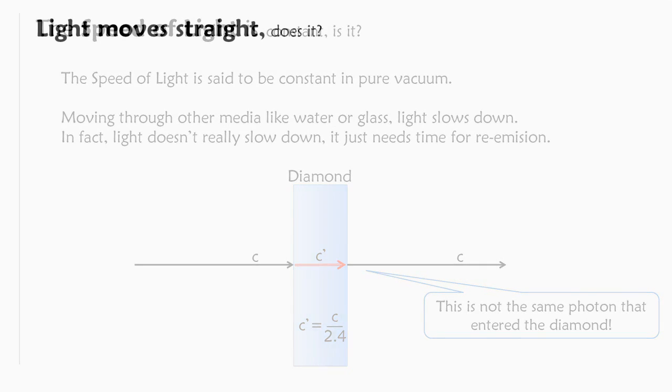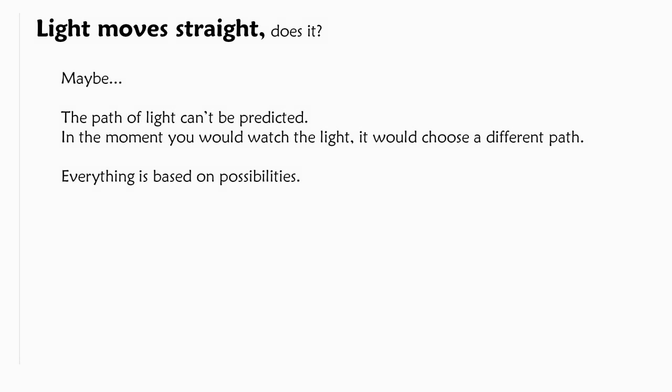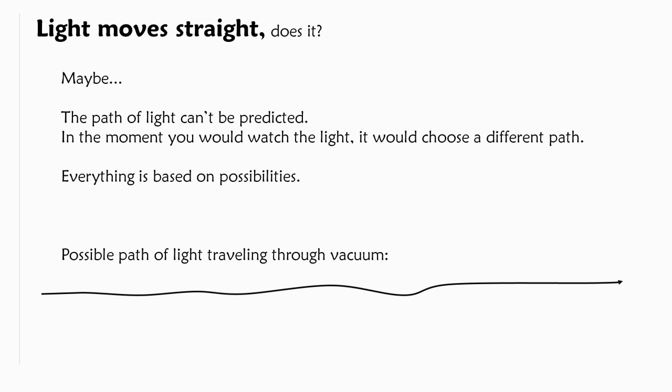Okay next chapter light moves straight does it and you can only say maybe because the path of light can't be predicted. In the moment you would watch the light it would choose a different path than it would take if you wouldn't watch. So everything is based on possibilities. And right here you see a possible path of light traveling through vacuum. It could look like this.